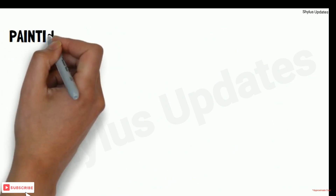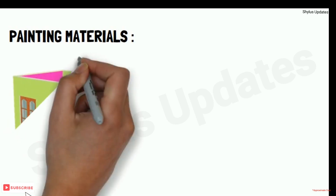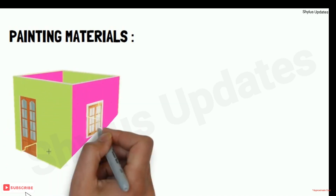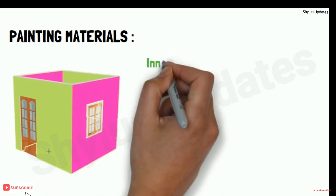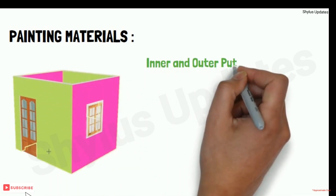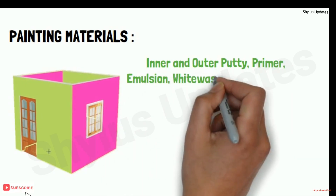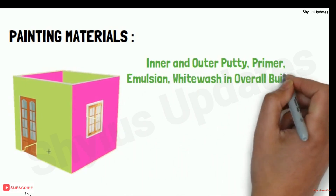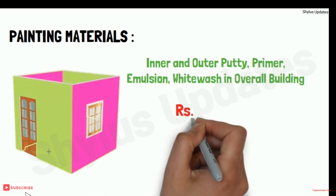For painting materials — inner and outer putty, primer, emulsion, and whitewash for the overall building — the total cost is rupees 60,000.